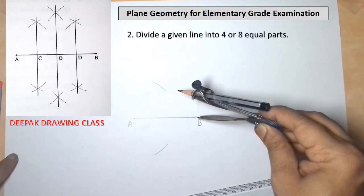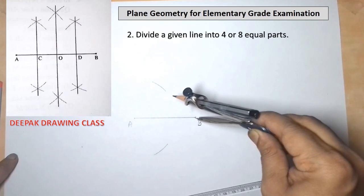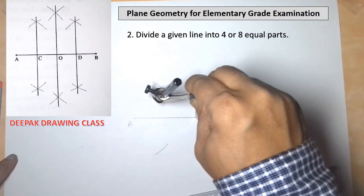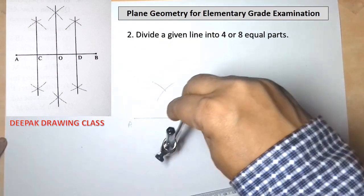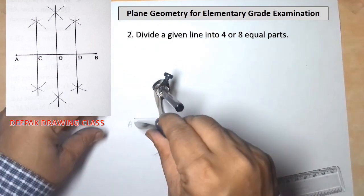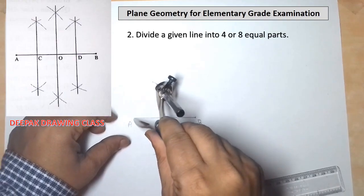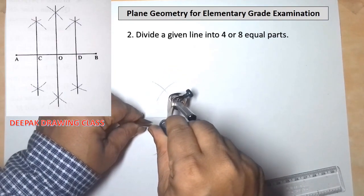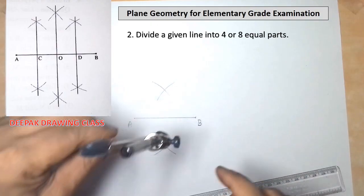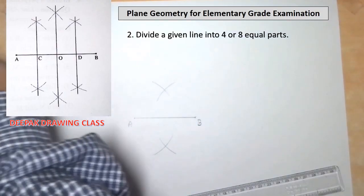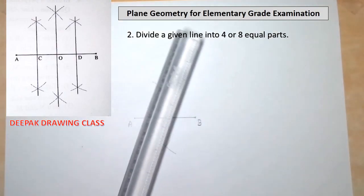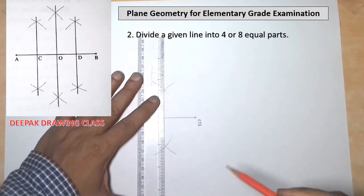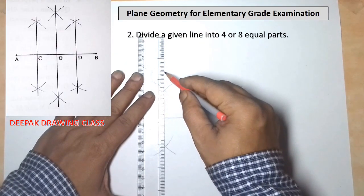With the same radius and B as the center, draw arcs intersecting the line AB. Then join these arcs by drawing a line passing through them.